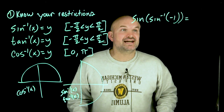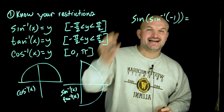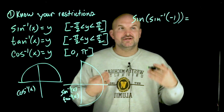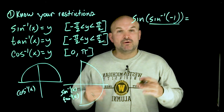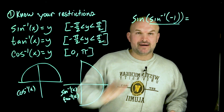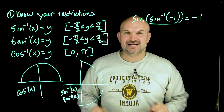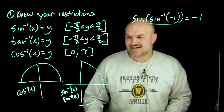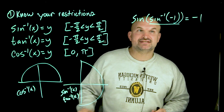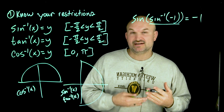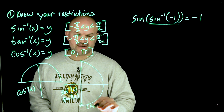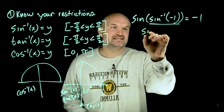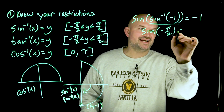If we have sine of sine inverse of negative one — since trigonometric functions and their inverses undo each other, always work inside out. The answer is just negative one because sine and sine inverse cancel. Step by step: sine inverse of negative one asks what angle within the restriction has y equal to negative one. On the unit circle, the point (0, -1) corresponds to negative pi halves. Then sine of negative pi halves gives the y coordinate, which is negative one.